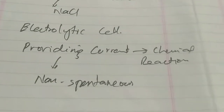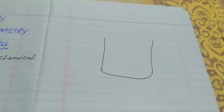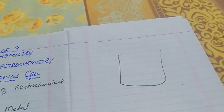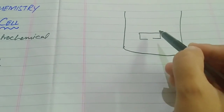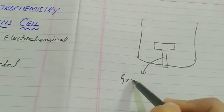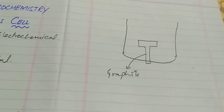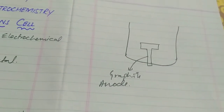Now coming to the construction of the Down Cell: there is a round tank. Inside this tank there is a goal-shaped structure, just like a drum. This allows us to use two electrodes. One electrode is the anode, which is made of graphite — the allotropic form of carbon. In an electrolytic cell, the anode carries a positive charge because it is connected to the positive terminal of the battery.